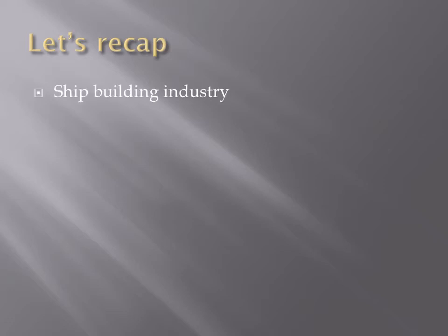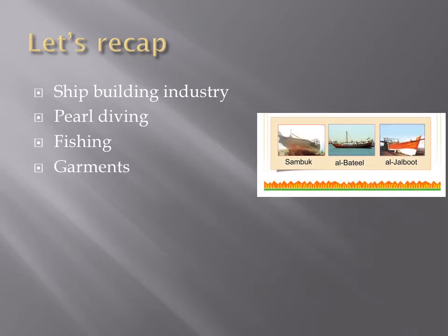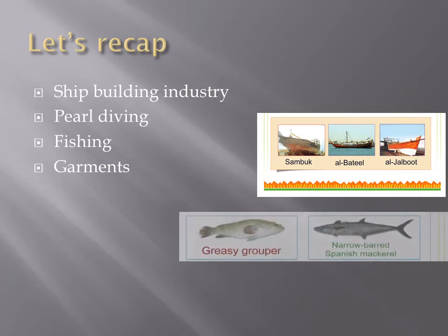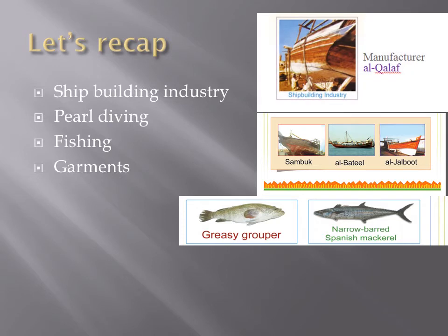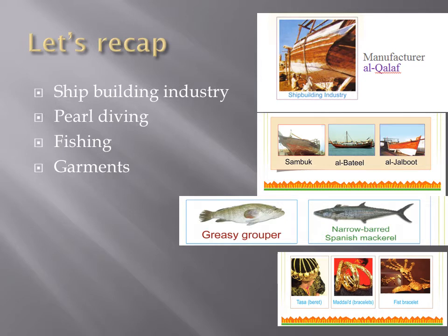We've really covered so much about Qatar history within a span of a few weeks. We learned about the shipbuilding industry, pearl diving, fishing, and garments. In the ships, remember the names: sambuk, albatil, aljalboot. And the names of the fishes: greasy grouper, narrow-barred Spanish mackerel. The manufacturer of the ship is al-kalaf.